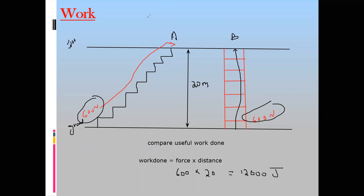Another person uses a rope to move from ground floor to the top floor. What will the work done be for this person of the same weight, 600 Newton? The answer is 12,000 joules, because they also reach the same height and have the same weight. So work done does not depend on the route or path which we follow. If we have identical objects and the same final position, they will all have the same useful work done.